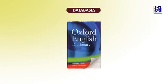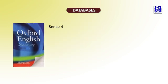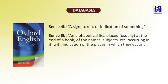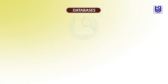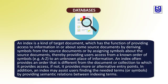The Oxford English Dictionary gives the following senses, among others. Sense A: a sign, token, or indication of something. Sense B: an alphabetical list placed usually at the end of a book, of names, subjects, etc., occurring in it with indications of the places at which they occur. Sense C, computing: a set of items, each of which specifies one of the records of a file and contains information about the address.